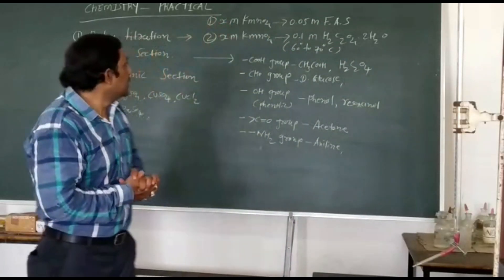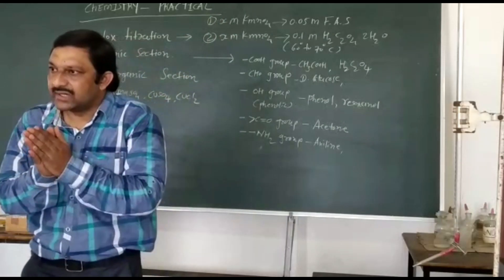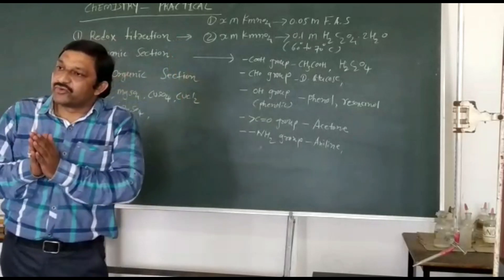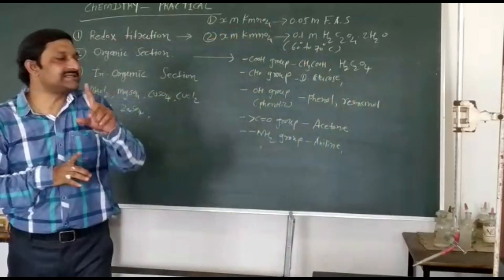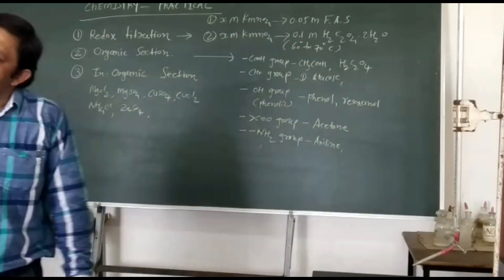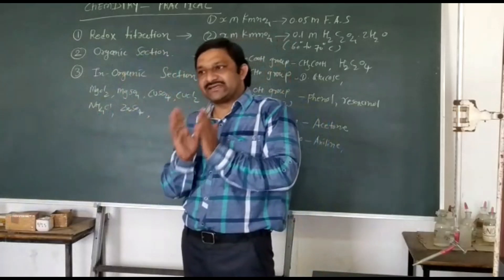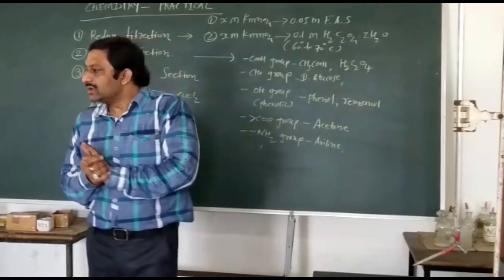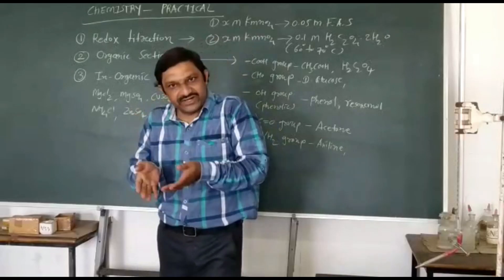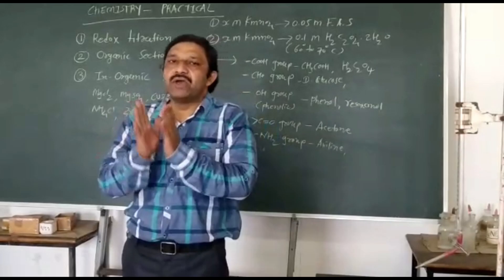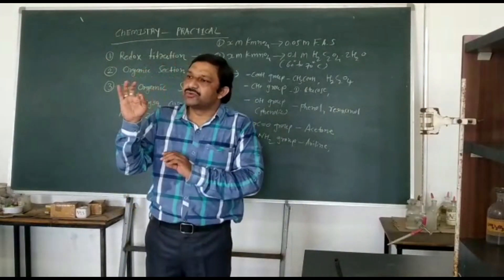In the first practical, you have to fill up your burette with X molar KMnO4 solution. You have to take 10 ml ferrous ammonium sulphate into your conical flask through a pipette. You have to add dilute sulphuric acid 25-30 ml through your tissue into your conical flask.